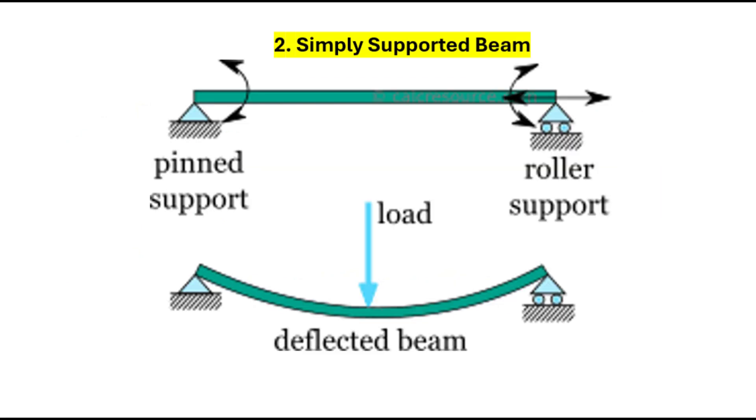2. Simply supported beam. This is the most basic type. It's supported at both ends. One end can rotate freely, and the other prevents vertical movement. It's widely used in bridges and buildings.